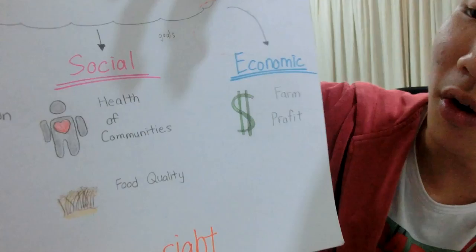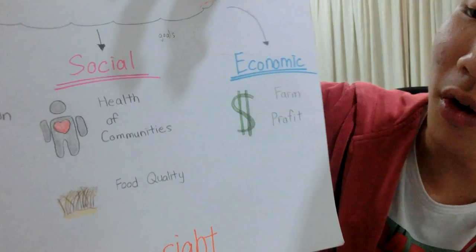For the third dimension, the economy, we will help to generate farm profit. So those are the three dimensions that sustainable agriculture focuses on. Sustainable agriculture is usually promoted and supported by wealthy people,